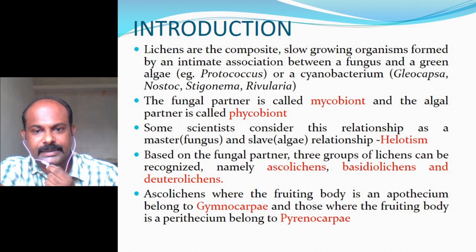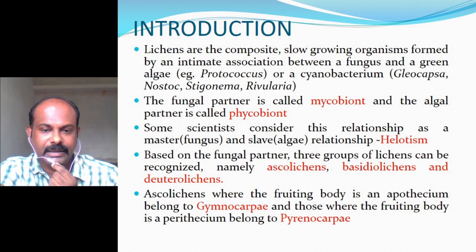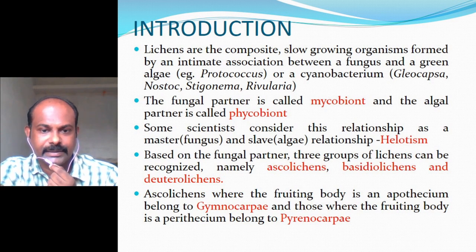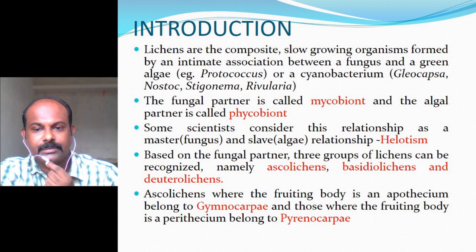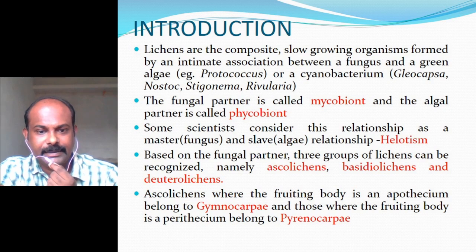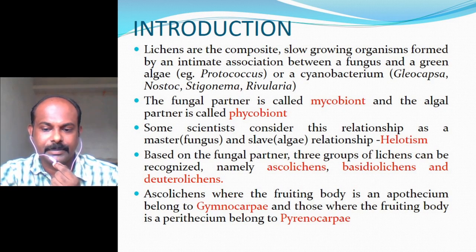Based on the fungal partner, three groups of lichens can be recognized: Ascolichens, Basidiolichens, and Deuterolichens. Ascolichens where the fruiting body is an apothecium belong to the group Gymnocarpae, and those where the fruiting body is a perithecium belong to the group Pyrenocarpae.